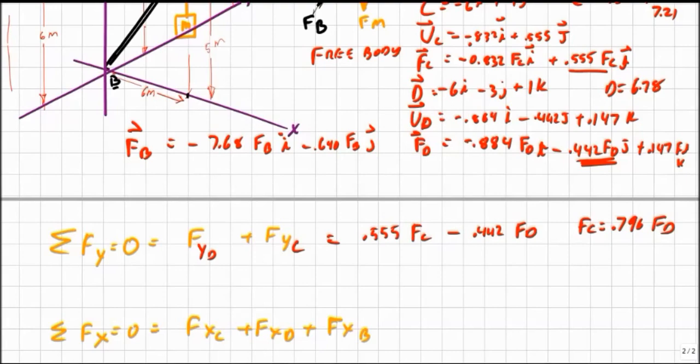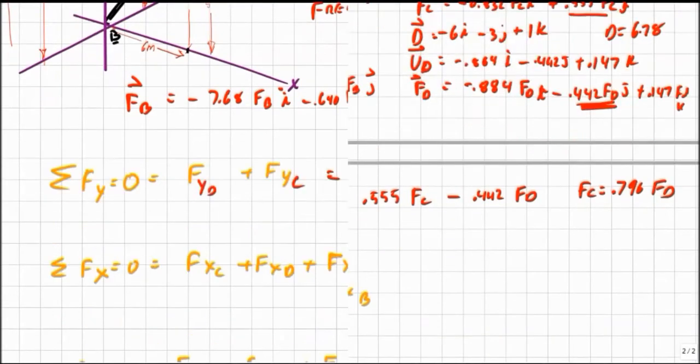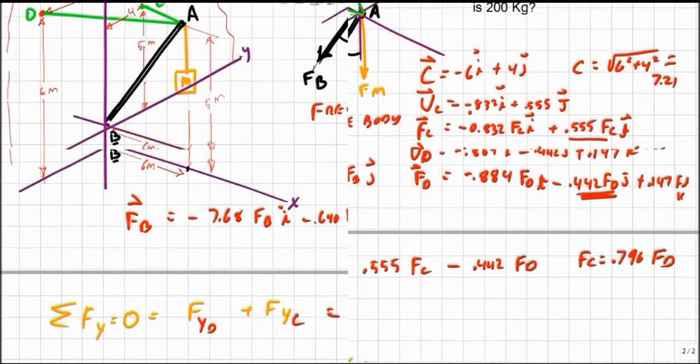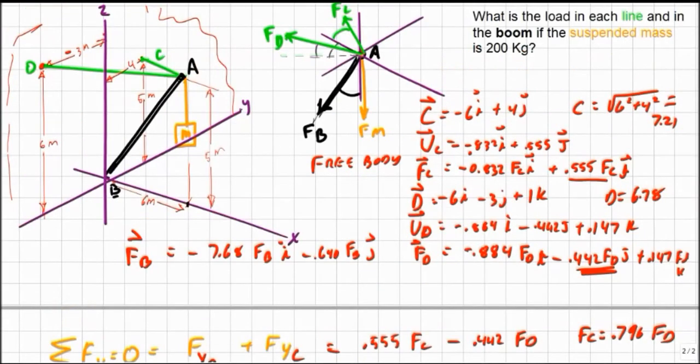If I go down to my sum of the forces in the X direction, we can see that AB has an X component, AC and AD all have X components and I'll circle them here.